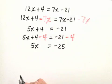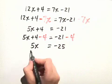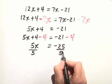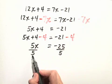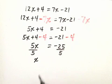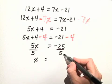Our last step is to divide both sides of this equation by the coefficient of x, which is 5. When we do that, the 5 divided by 5 gives us 1, so we have 1x or just x is equal to negative 25 divided by positive 5.